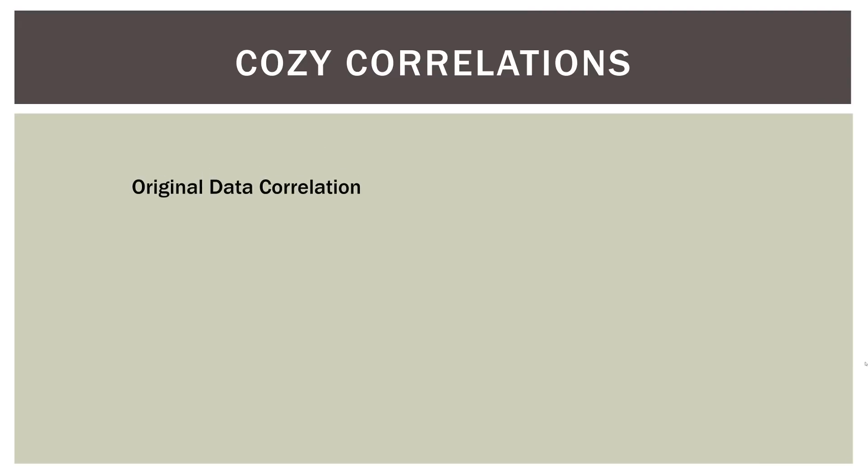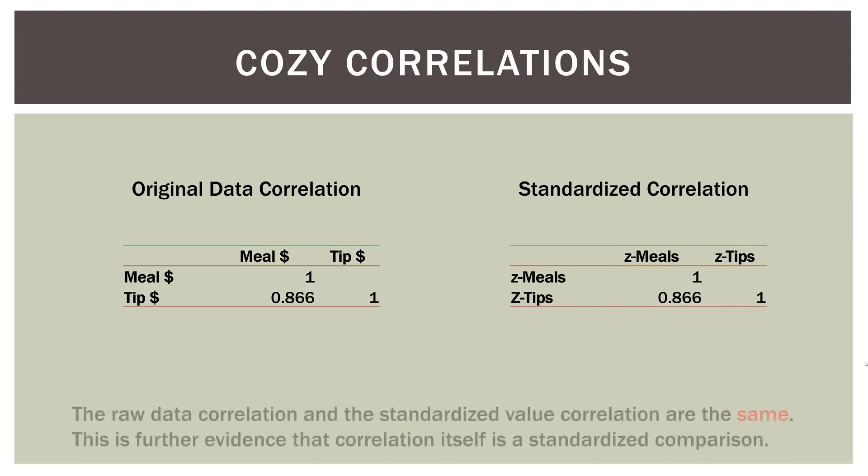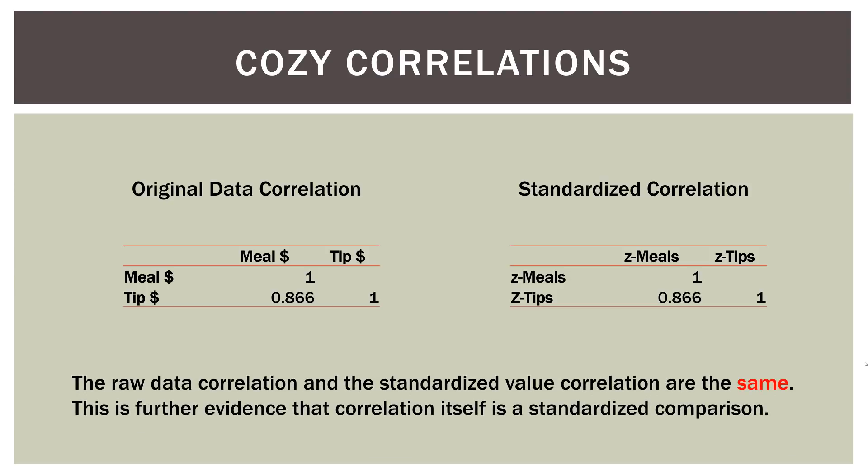So cozy correlations. Here is our original data correlation when we were dealing with meal dollars and tip dollars. The correlation between those two things was 0.866. Now look what happens when we find the correlation for our standardized values. It's the same. So what we can say is that the raw data correlation and the standardized value correlation are the same. This is further evidence that correlation itself is a standardized comparison. Regardless of whether we're using original data in dollars or standardized values that we turn into z-scores, the correlation is the same.